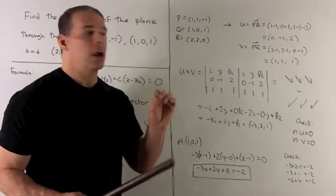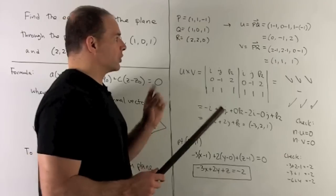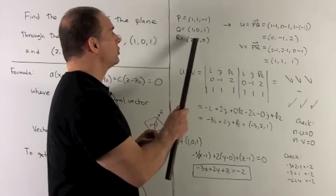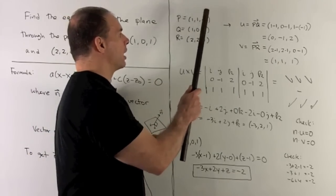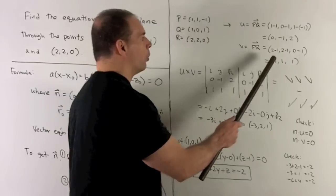If I want PR, that's going to be my V. That's going to be 2 - 1, 2 - 1, 0 - (-1). That gives me (1, 1, 1).